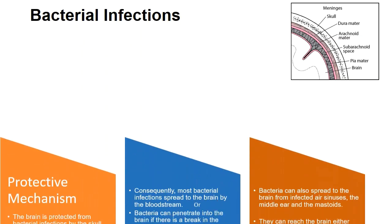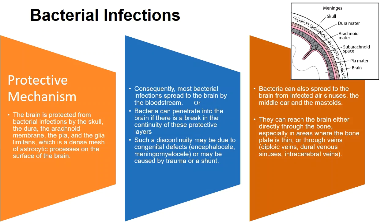Bacterial infections — what is the protective mechanism of the brain? The brain is protected from bacterial infections by the skull, the dura, the arachnoid matter, and particularly the glia limitans, which is a meshwork of astrocytic processes on the surface of the brain. Together, the skull, dura, arachnoid and glia limitans protect the brain. Consequently, most bacterial infections spread to the brain by the bloodstream, or bacteria can penetrate if there is a break in the continuity of this protective layer.